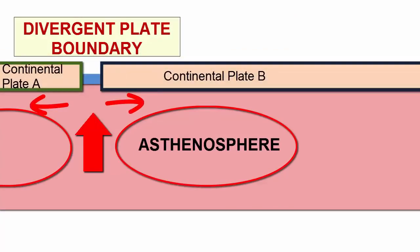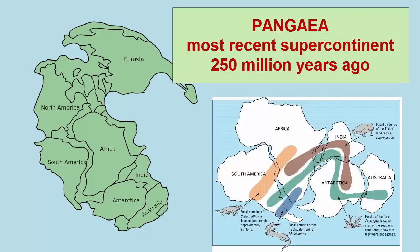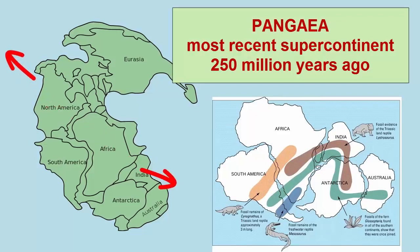The most recent supercontinent that tore apart to create the current geometry of Earth's plates was called Pangaea. Based on fossil evidence, it existed 250 million years ago, when all the continents we know today were fused together — one continent and one surrounding ocean. After the supercontinent began to break apart and the plates thinned enough,